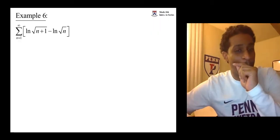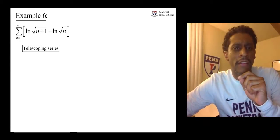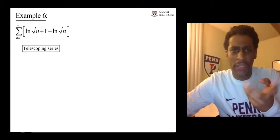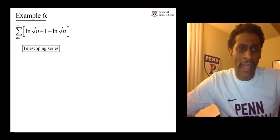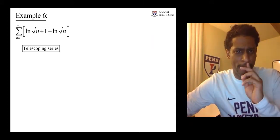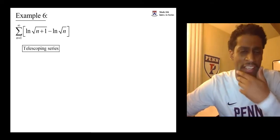Okay, this is an example of a telescoping series where something unexpected happens. What we have is the ln of the root of n plus 1 minus the ln of the root of n, from n equals 1 to infinity.